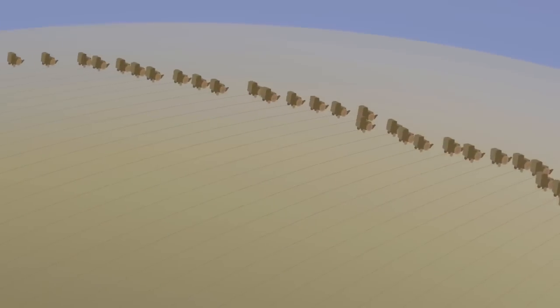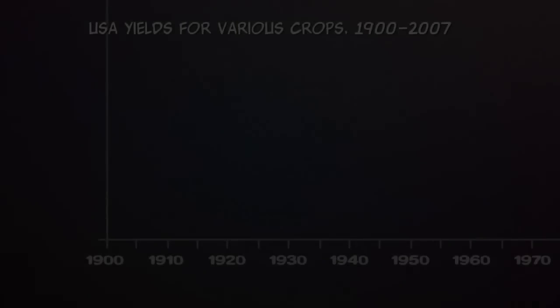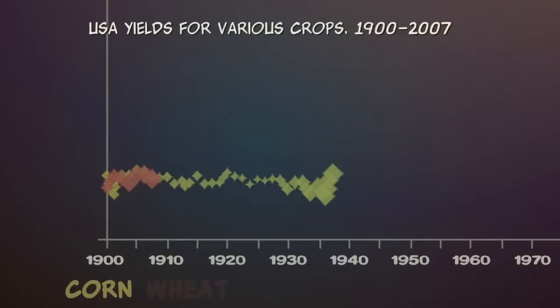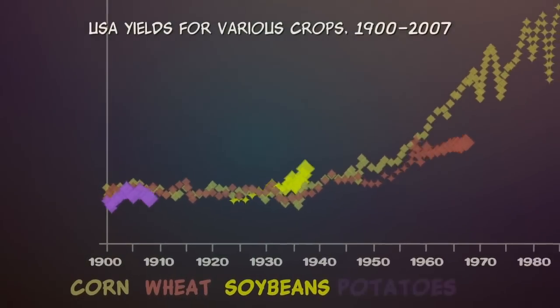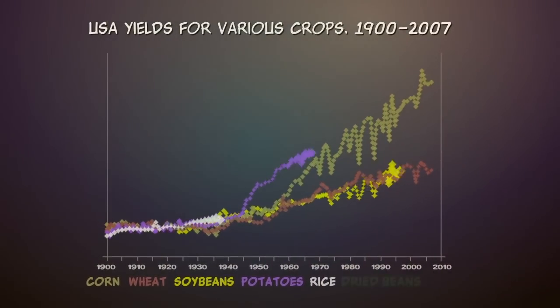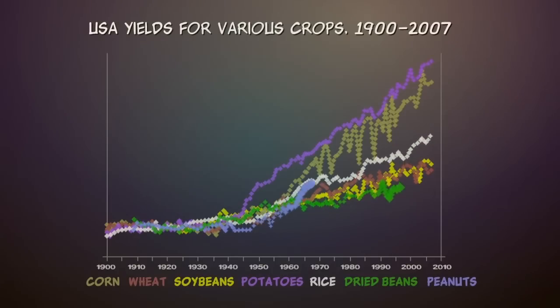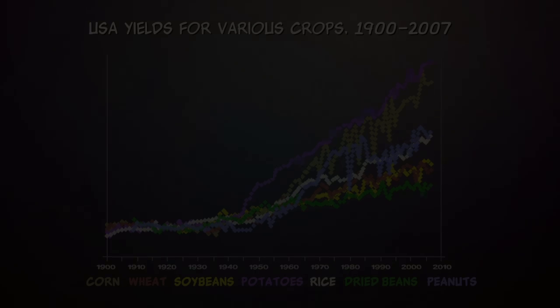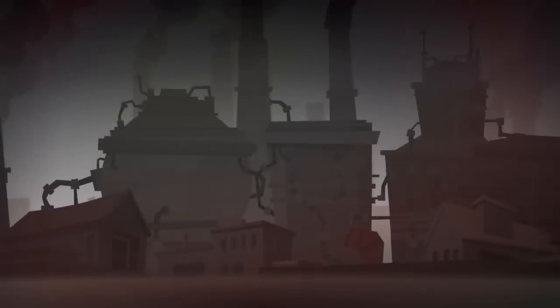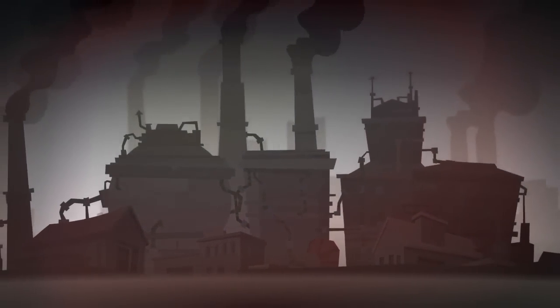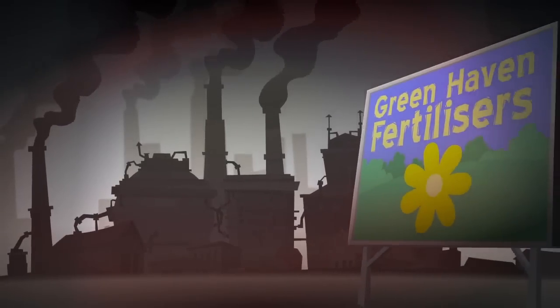The global food supply relies heavily on fossil fuels. Before World War I, all agriculture was organic. Following the invention of fossil fuel-derived fertilizers and pesticides, there were massive improvements in food production, allowing for increases in human population. The use of artificial fertilizers has fed far more people than would have been possible with organic agriculture alone.